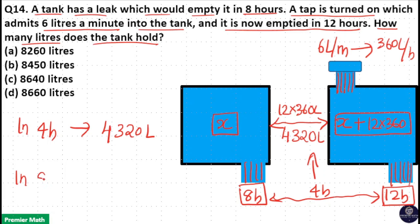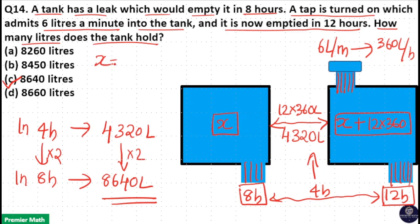So in 8 hours, how much liter is emptying? 4 times 2 is 8, so 4320 times 2 is 8640 liter. So option C is your answer, x here is 8640 liter.